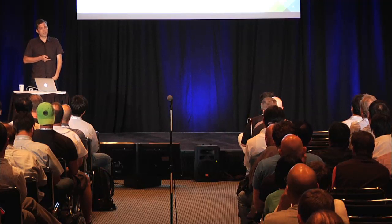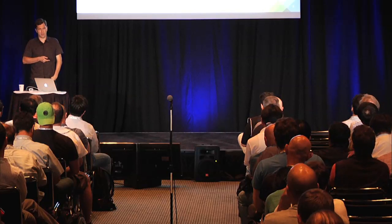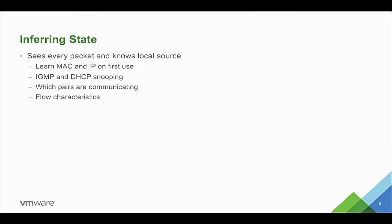In terms of inferring state, this is commonly done on switches implementing policies. The most common case is learning the MAC and IP address the first time a VM comes up and starts communicating. Something not currently in OVS but implemented via daemons is IGMP and DHCP snooping, so you can dynamically learn the group or IP address being used by the guest VM. You can also observe which pairs of systems are talking and see their flow characteristics — this is the advantage of being at the edge.